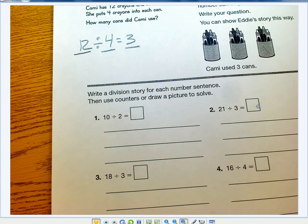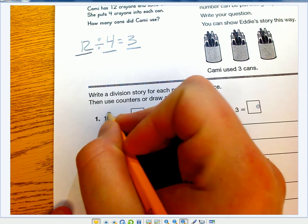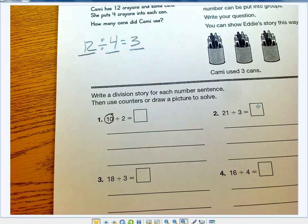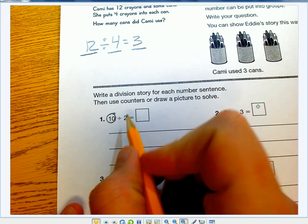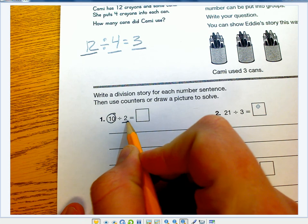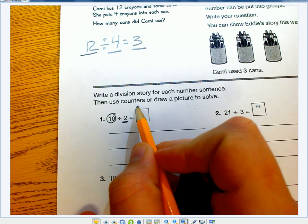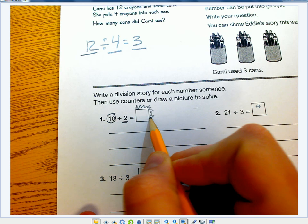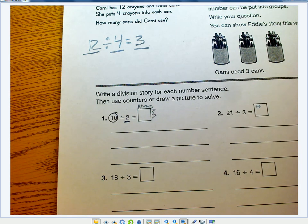So let's start with number 1, 10 divided by 2. My 10 is going to be my total number, so I know my biggest number in this whole problem can be 10, no bigger than 10. And then I have how many groups? Two groups. And then this unknown number is going to be my number in each group.